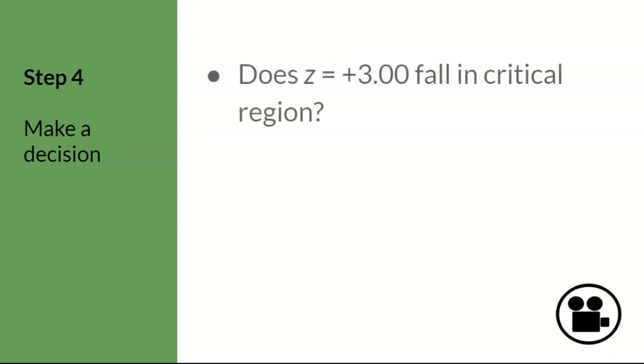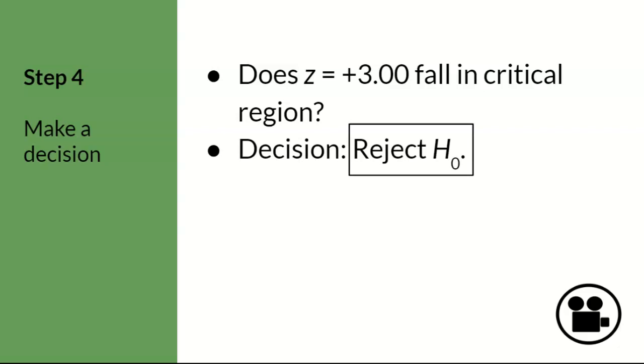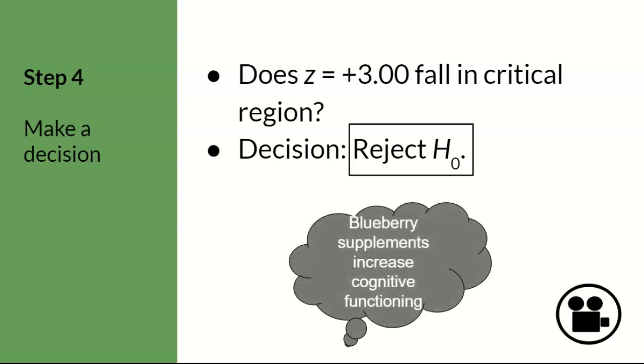Step 4. Now we need to compare the sample z-score that we calculated in step 3 to the population prediction which we determined in step 2. In other words, does the z of plus 3 fall in the critical region z from step 2? Since plus 3 is way beyond the tail passed to the z of plus 1.96, the answer is yes. Then the decision is to reject the null hypothesis. The box here indicates the final answer that I will be looking for on a problem set and an exam. Basically, it looks like blueberry supplements probably work. More specifically, since the z-score for the sample was a plus 3, which is above the mean, it looks like cognitive functioning increased.